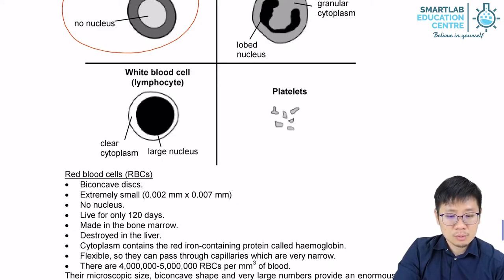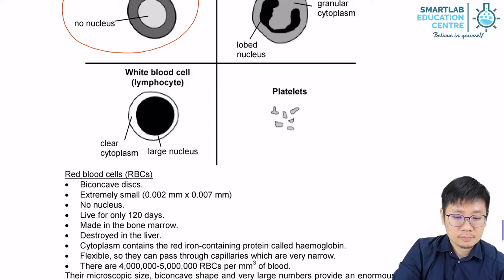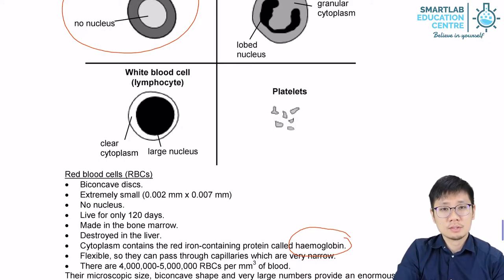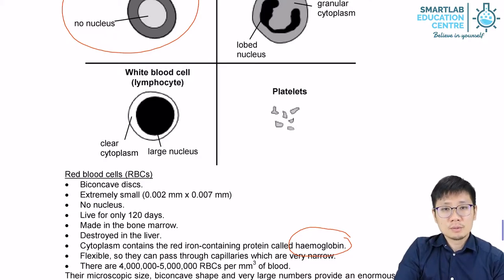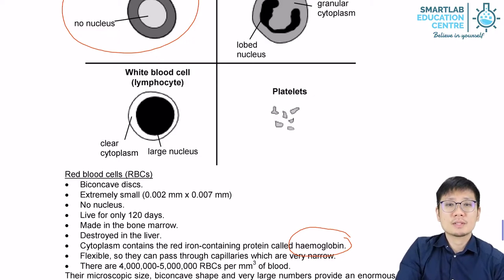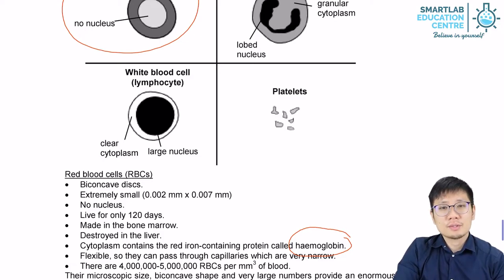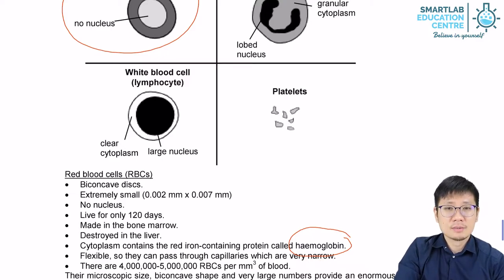What is hemoglobin? Hemoglobin is a protein used by red blood cells to carry oxygen — this is how your red blood cells hold oxygen. Hemoglobin is famously red in color, and this is what makes your red blood cells look so red. Hemoglobin also contains iron, the metal, which is why blood tastes metallic.